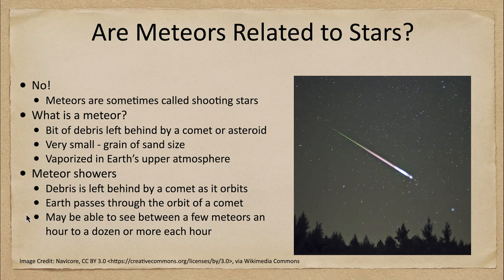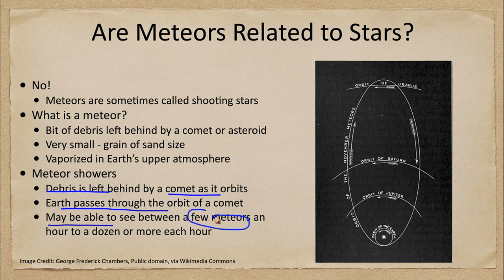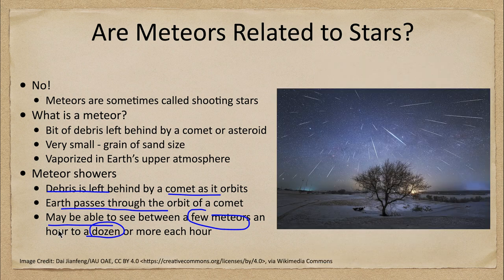Meteors actually tend to come in showers. So what is a meteor shower? Well, it's the debris left behind by a comet in its orbit. As the earth passes through that orbit, we may be able to see anywhere from a few meteors an hour to a dozen or more every hour — sometimes several dozen. In the most intense meteor showers you can see a couple per minute, as in an image like this one.